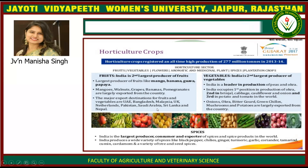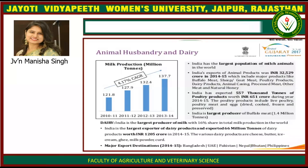India is the largest producer, consumer and exporter of spices and spice products in the world. India produces a wide variety of spices like black pepper, chillies, ginger, turmeric, garlic, coriander, tamarind, cumin, cardamom and a wide variety of tree and seed spices.